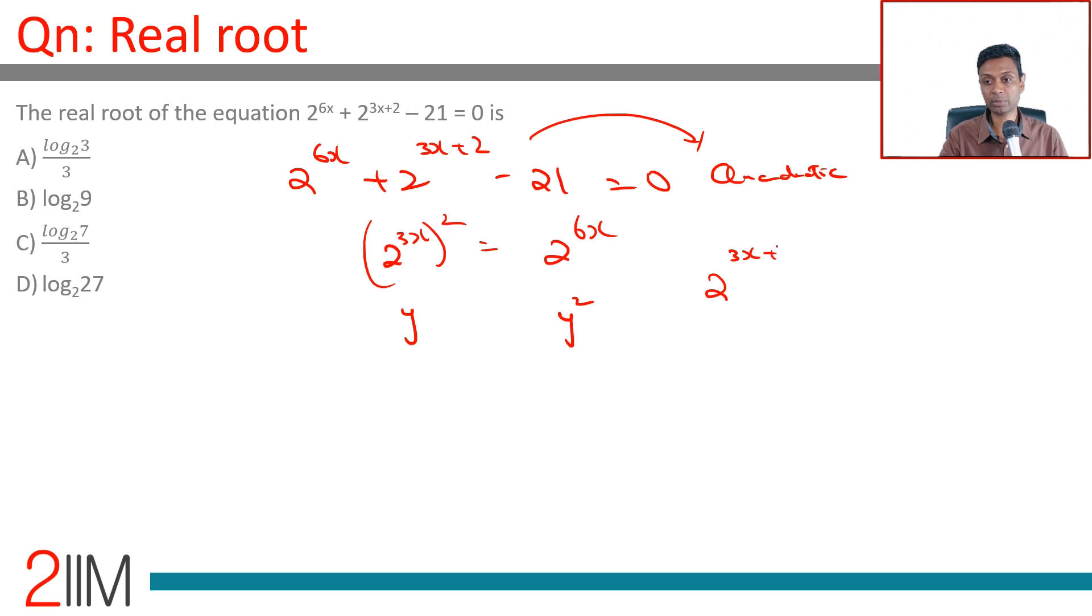What is 2^(3x+2)? That is nothing but 2^(3x) × 2², so this equation becomes y² + 4y - 21 = 0.